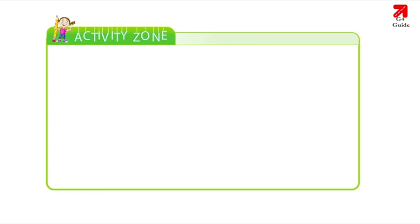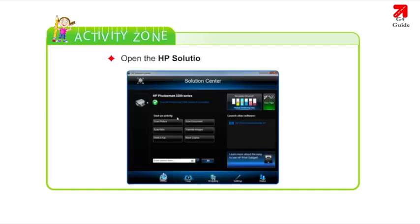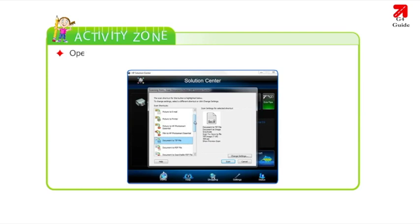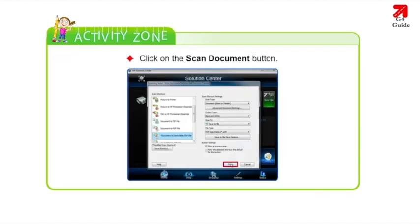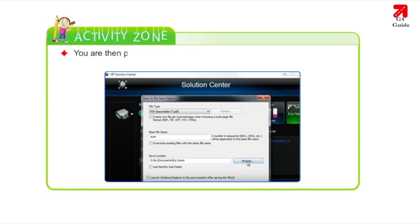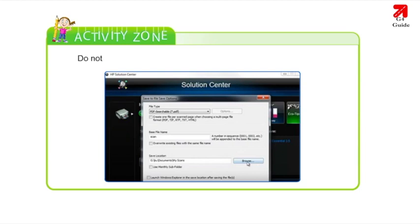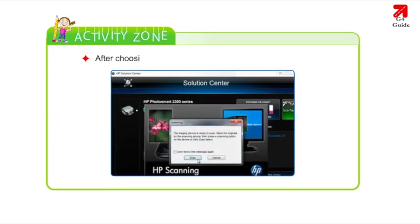Activity — How to scan text, graphics and photographs: Open the HP Solutions Center on your system. Open the lid of the scanner and place the picture or document you wish to scan facing downwards. Click on the Scan Document button. You are then prompted to save your file as an editable document or an image. Select the location where you want to save the file. After choosing the desired settings, click on the Scan button.